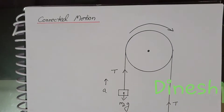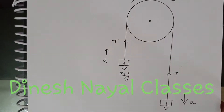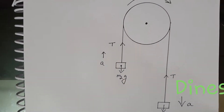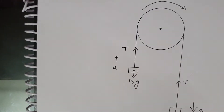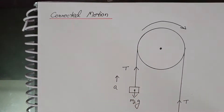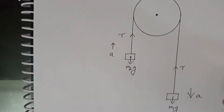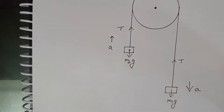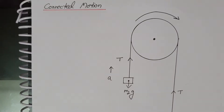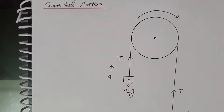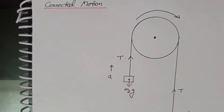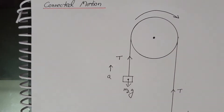In connected motion, consider the pulley system. Two bodies of masses M1 and M2 are tied at the ends of an inextensible string — meaning the string cannot be extended. This string passes over a light and frictionless pulley.